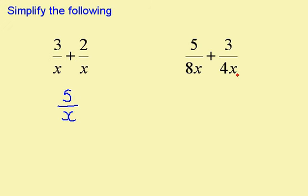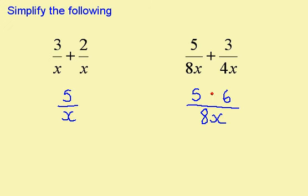In this question, I can see a common denominator of 8x. This goes into 8x once, so I multiply 5 by 1 to get 5. This goes into 8x twice, so I multiply 3 by 2 to get 6. I now have 5 plus 6, which is 11, over 8x.